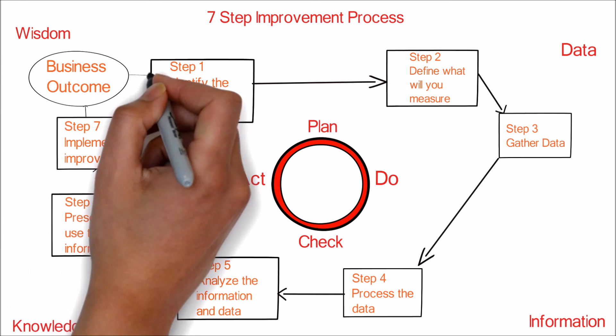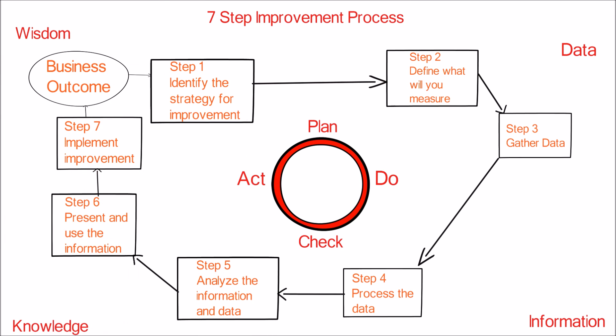The final step is to implement the corrective activities. As CSI has identified the areas that need a change, solutions and remedial plans are communicated to the management to improve the service. A change thus implemented for the improvement sets a new baseline, and the cycle begins again.